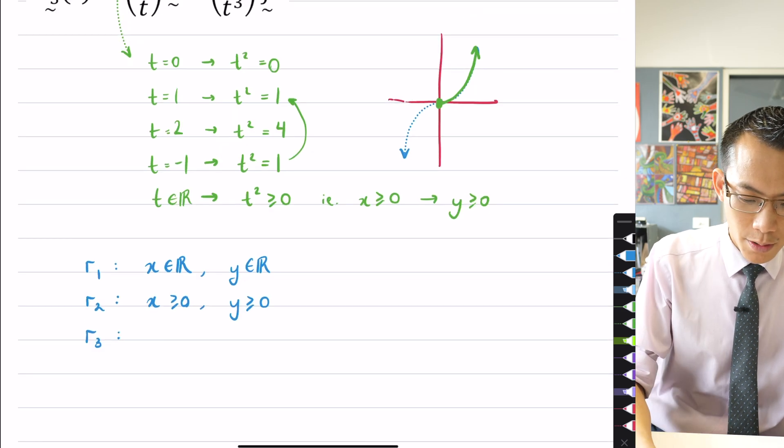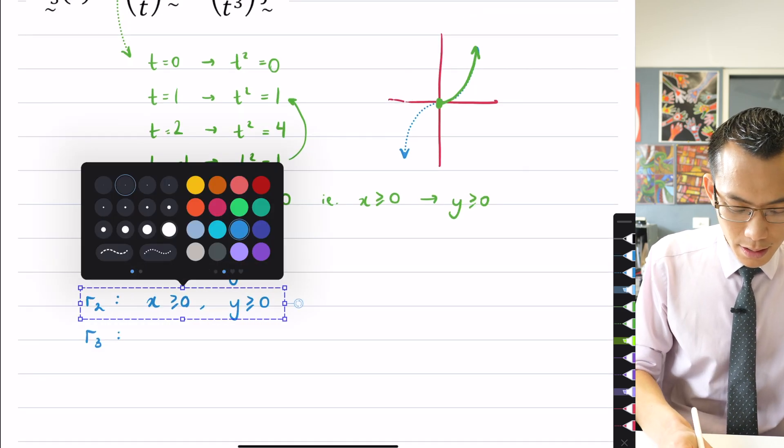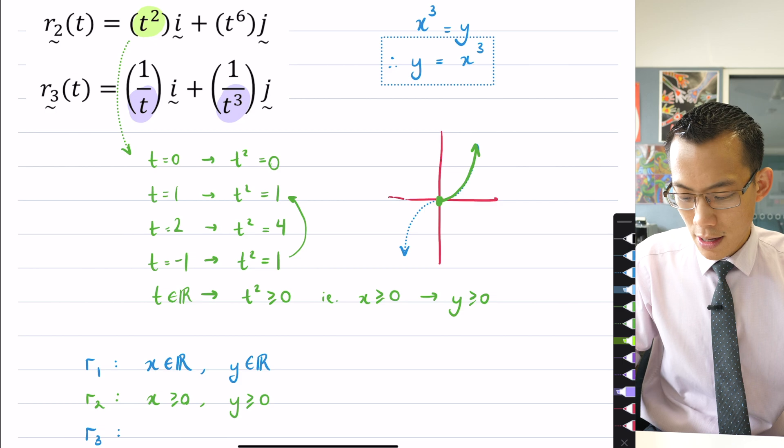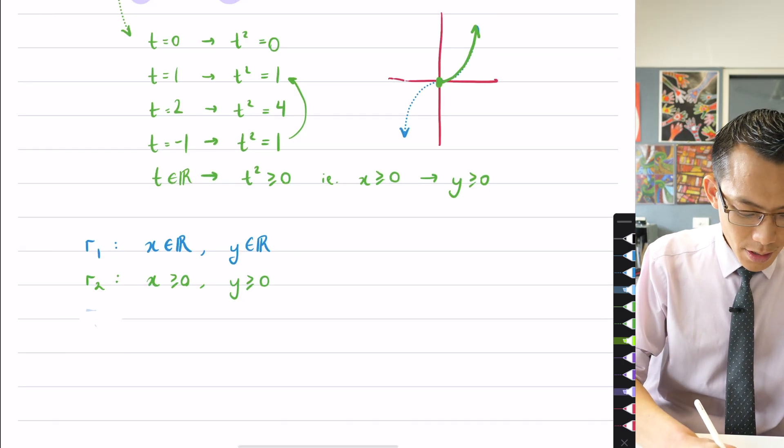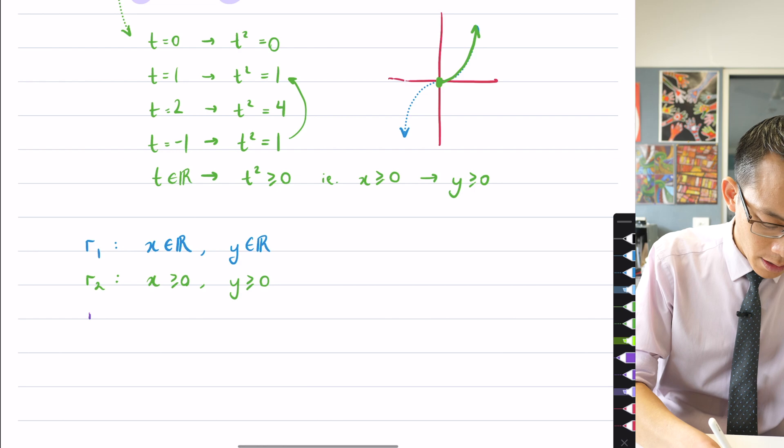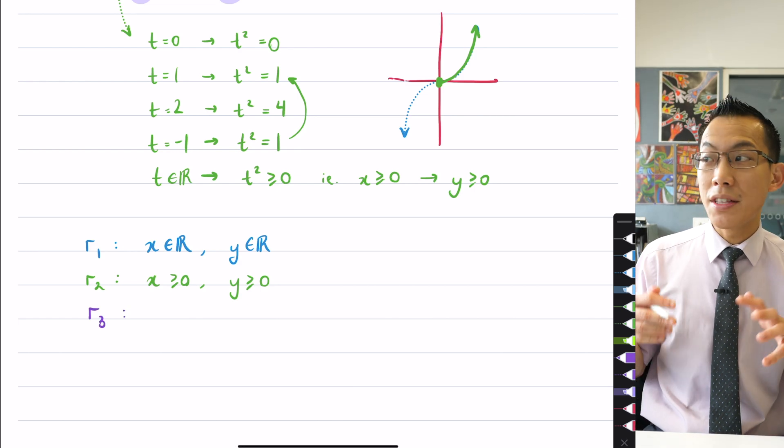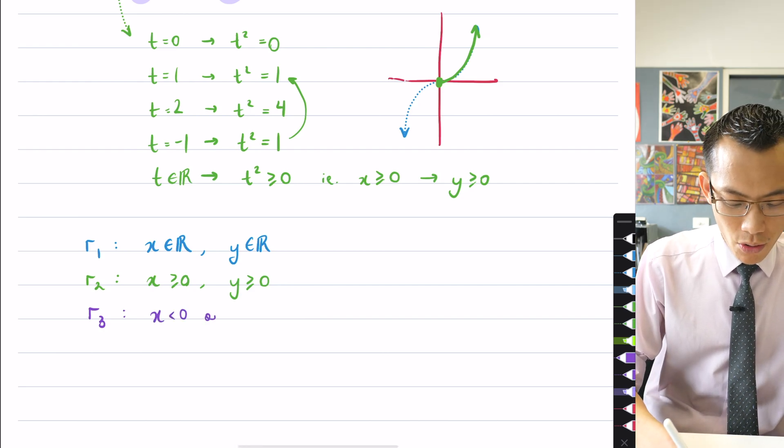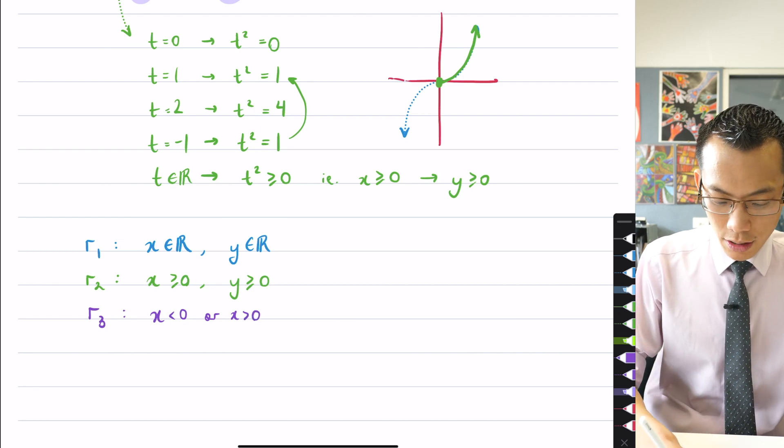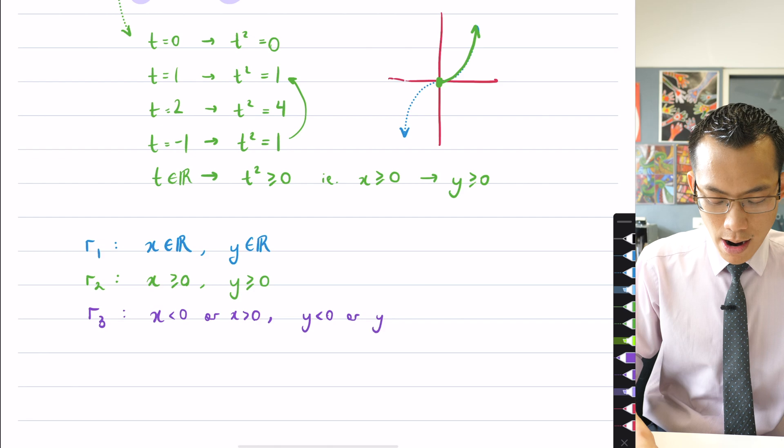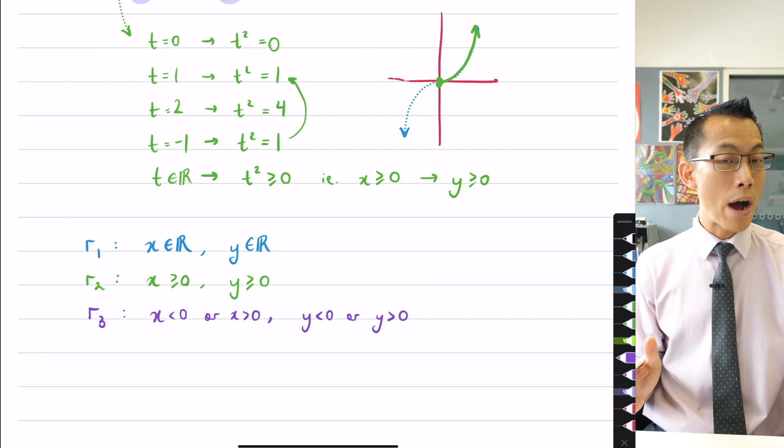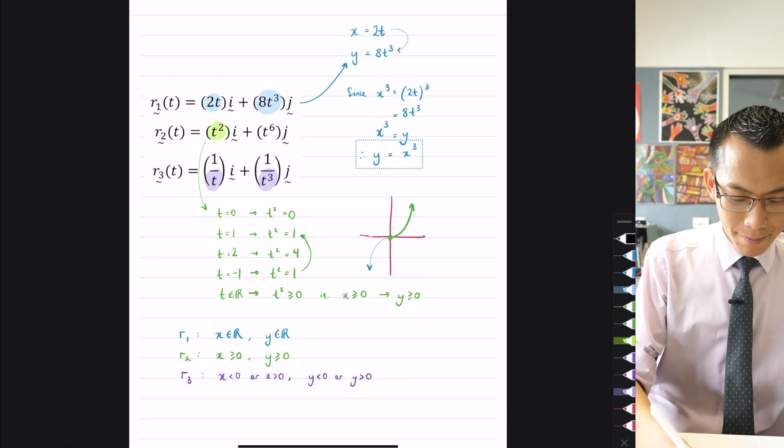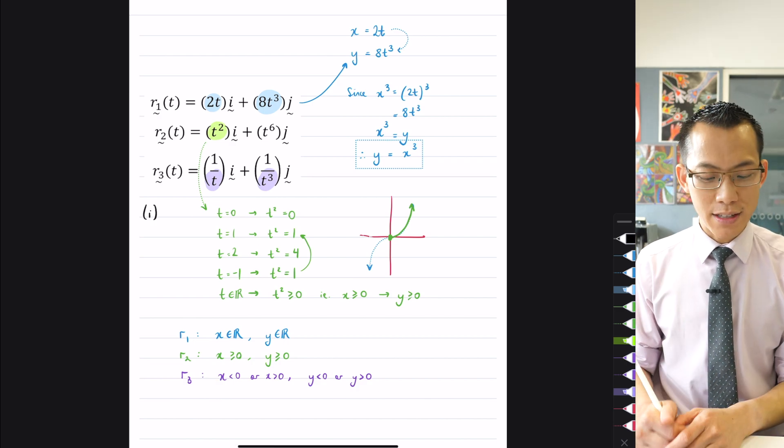But there is a value of t that you cannot substitute into either of these different parametric forms. It's not explicit, it's just implied in the equation. We can never divide through by 0. That's not defined. So therefore, t can't equal 0. You can go anywhere else, but you can't reside right at the origin. So for r₃, you can say all real values except for x equals 0, but I think it's just as succinct to say x is less than 0 or x is greater than 0. And alongside that, y is less than 0 or y is greater than 0. That is part 1, that's the differences in the domain of the different parametric equations.